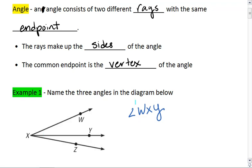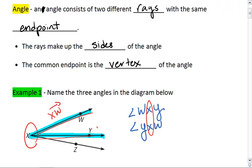Okay, real quick before we jump into the other two angles, you could also name angle WXY as angle YXW. It means the same exact angle, because we have the same vertex, and we have the same two sides of XW and XY.